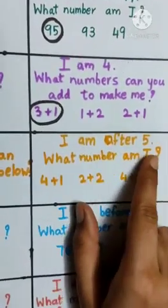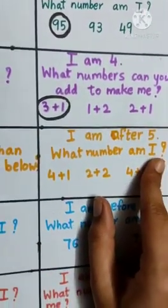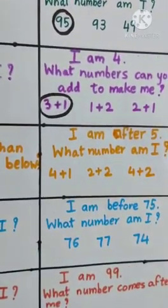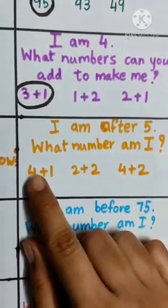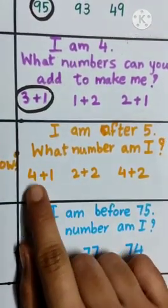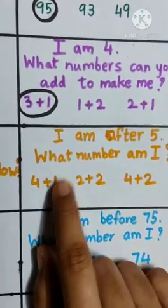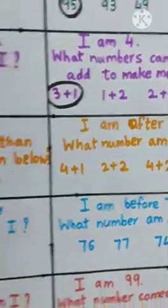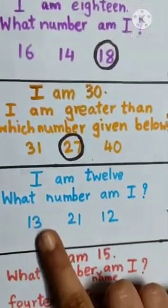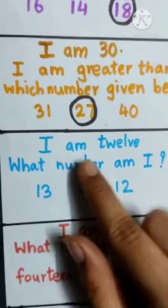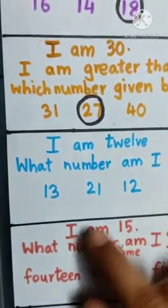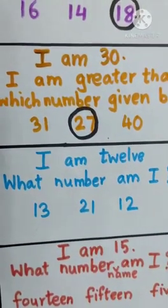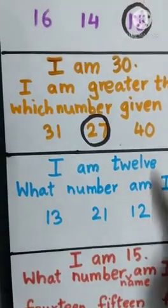I am after 5. What number am I? Here we are given the options of adding the numbers, but the question is different. So, we are not solving this question. Look at the next one. I am 12. What number am I? Can you recognize which of these three numbers is 12? Yes, it is this number.